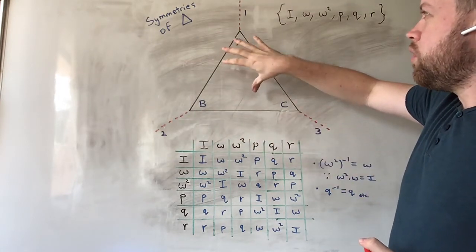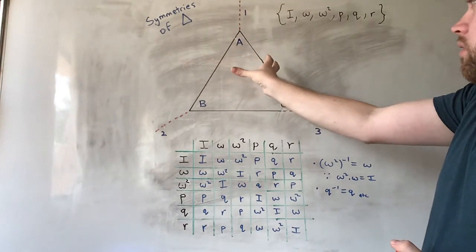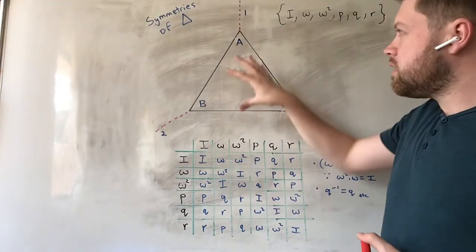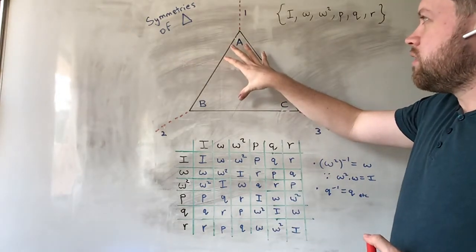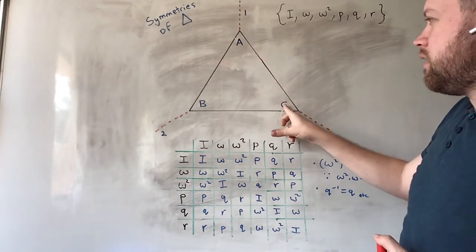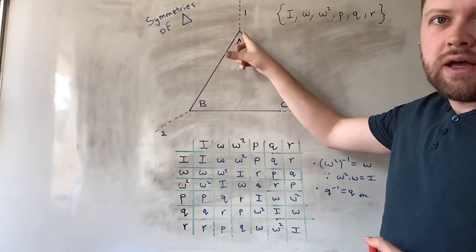We can rotate the triangle 120 degrees. If we rotate the triangle 120 degrees, let's do it clockwise. So, A moves to C, C moves to B, and B moves to where A is.